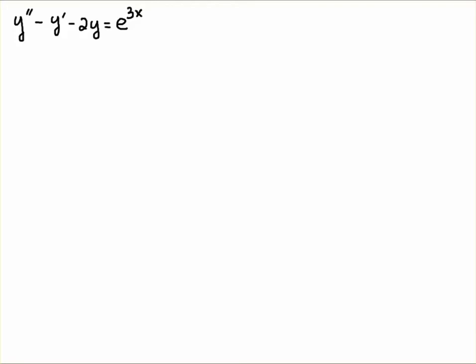Hello students. In this video we're going to use variation of parameters to solve a second order linear constant coefficient non-homogeneous ODE. The difference here is that on the right hand side it's not zero — it's a function of x. So we're going to need a slightly different formulation for coming up with a solution to an ODE like this.